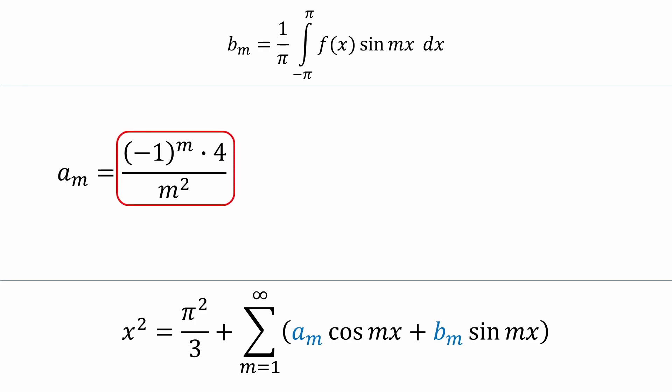And that leaves us with our final expression for aₘ. After all that work, it becomes (-1)ᵐ times 4 over m². Let's plug it into our Fourier series below.